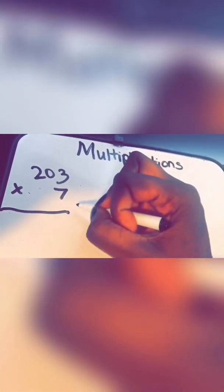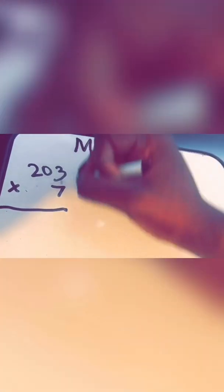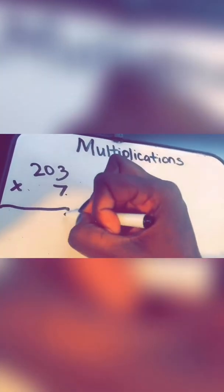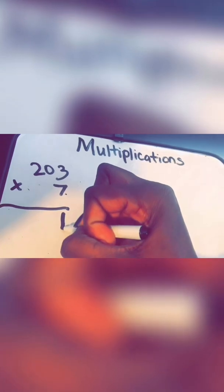We're going to say 103 times 7. That's one of the basic three digit by one digit. Okay? Seven times three is 21. We're going to put the one here. We're going to put the two over here.